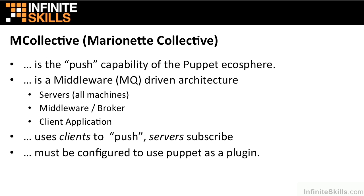mCollective must also be configured with plugins. By default mCollective can perform only a few simple commands, basically seeing the status of an infrastructure. Actions have to be configured using plugins. When installing mCollective, you'll want to also install the mCollective puppet plugin. You may also want to install the mCollective service plugin, which gives you control over services on individual machines — for example, doing a web server restart across your entire infrastructure.